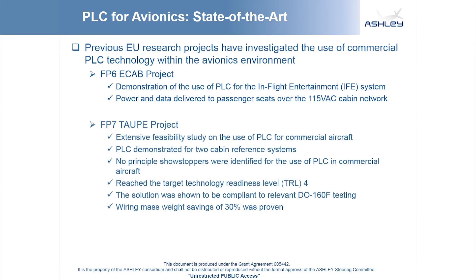The second project was the FP7 Taupe project, in which an extensive feasibility study on the use of PLC for commercial aircraft was performed. The cabin lighting system and cabin communication system for the Airbus A380 served as reference systems for this investigation. No principal showstoppers were identified, and the verification work showed that a technology readiness level of 4 was achieved. An analysis of the developed PLC solutions showed that a 30% saving of the wiring mass could be achieved.